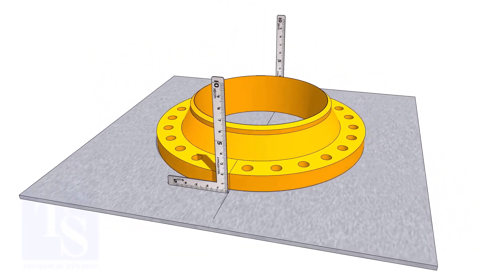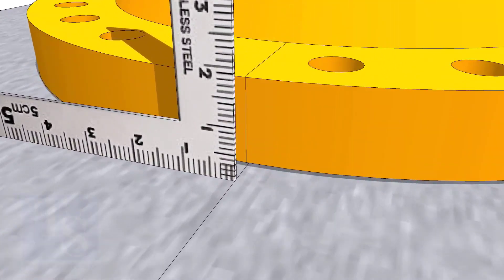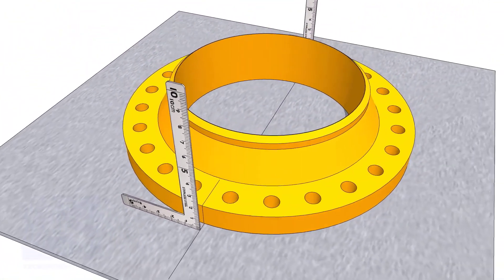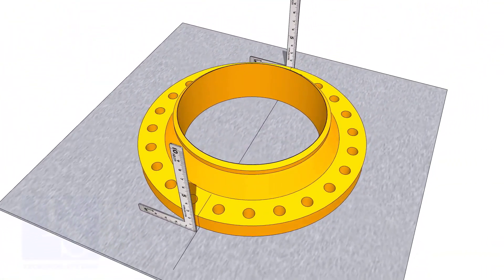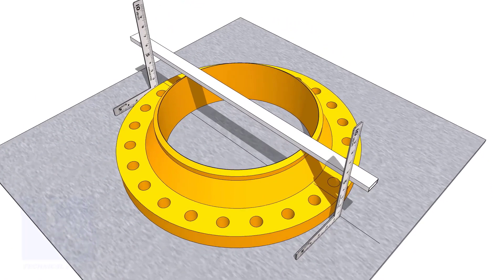Put right angles on the plate and exactly on the line. Transfer the center line on the top of the flange.